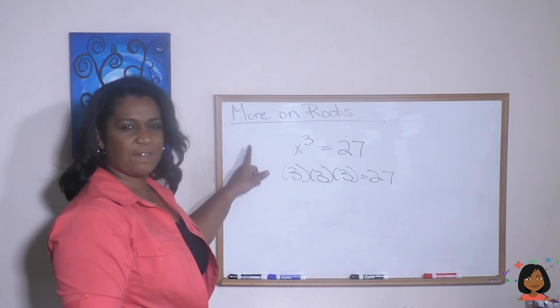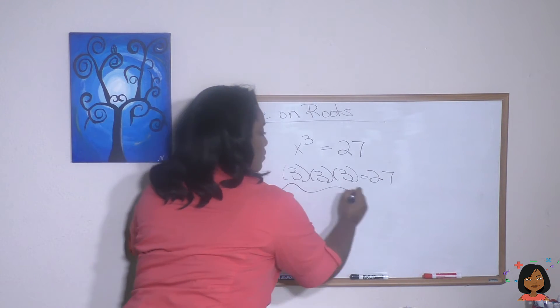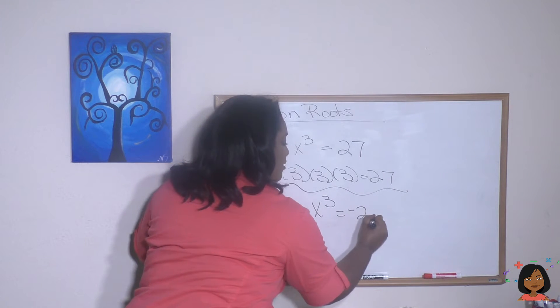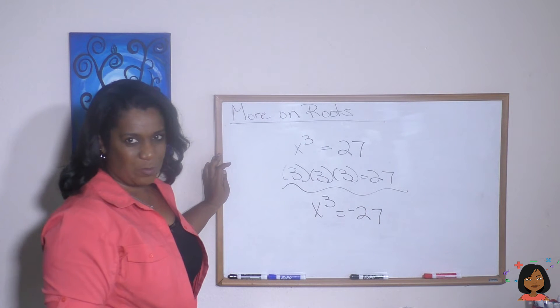Well, that would be 3. x to the third equals negative 27. What would be the answer there?